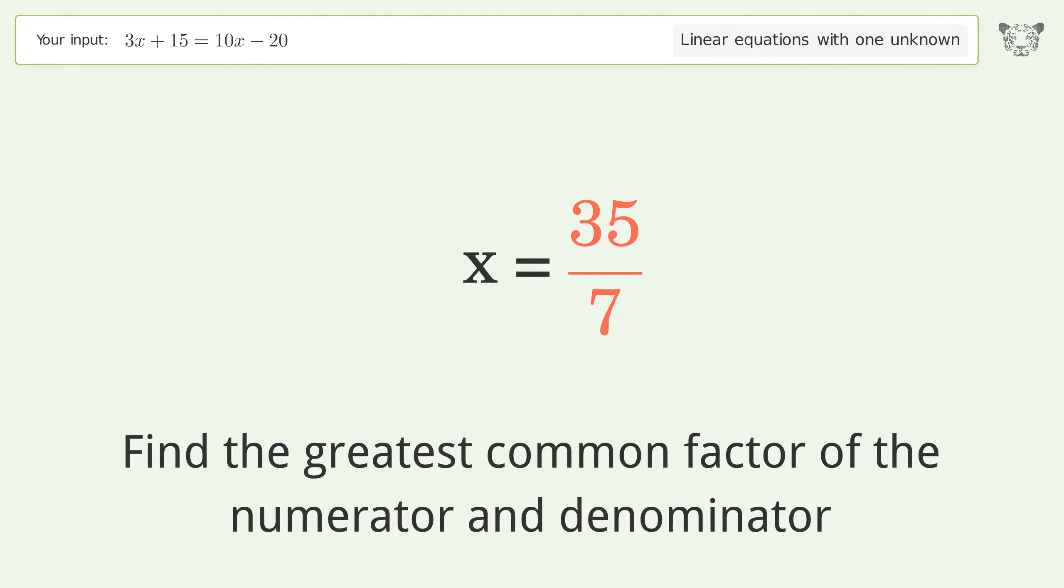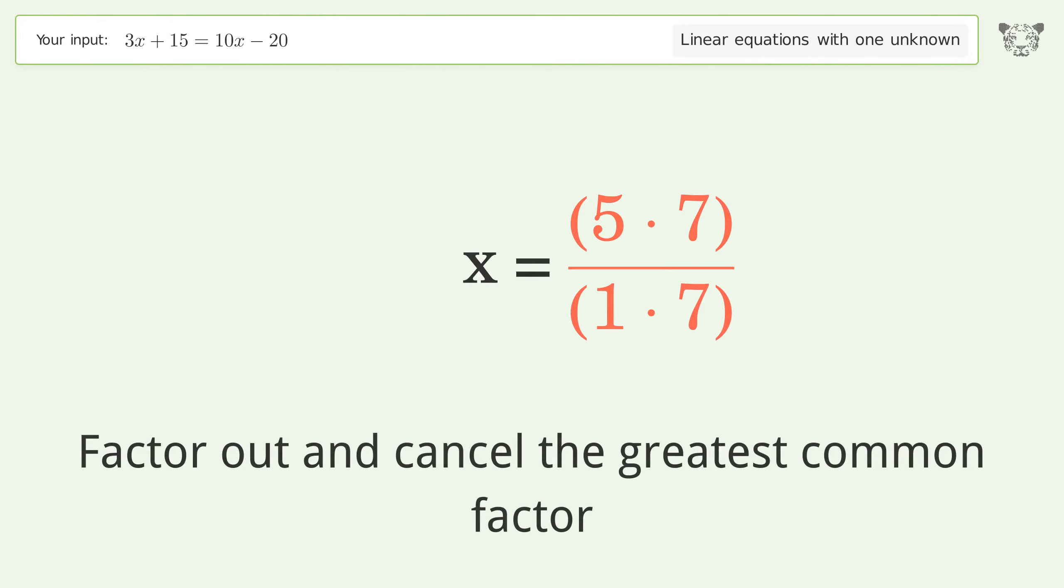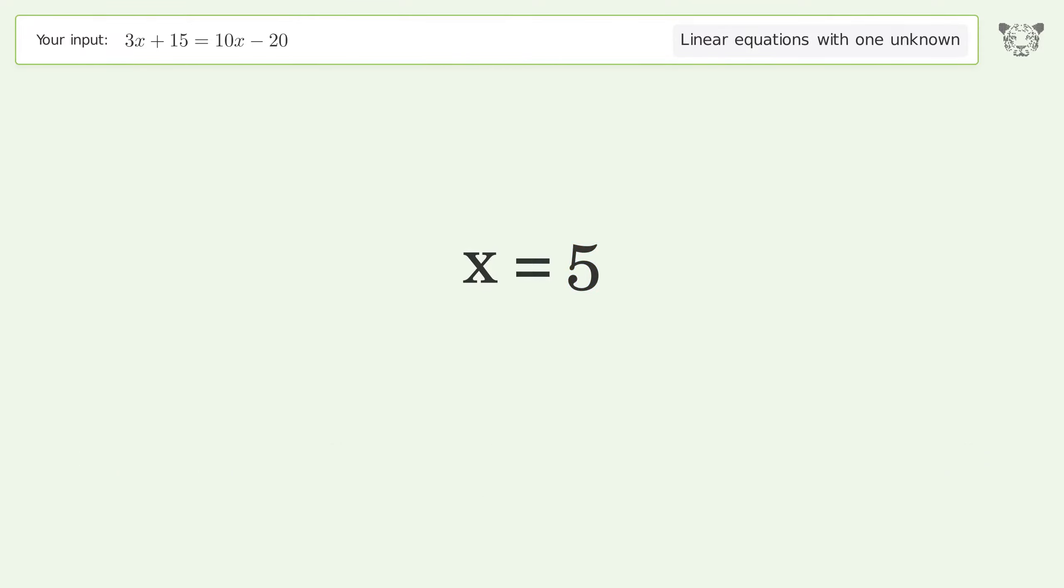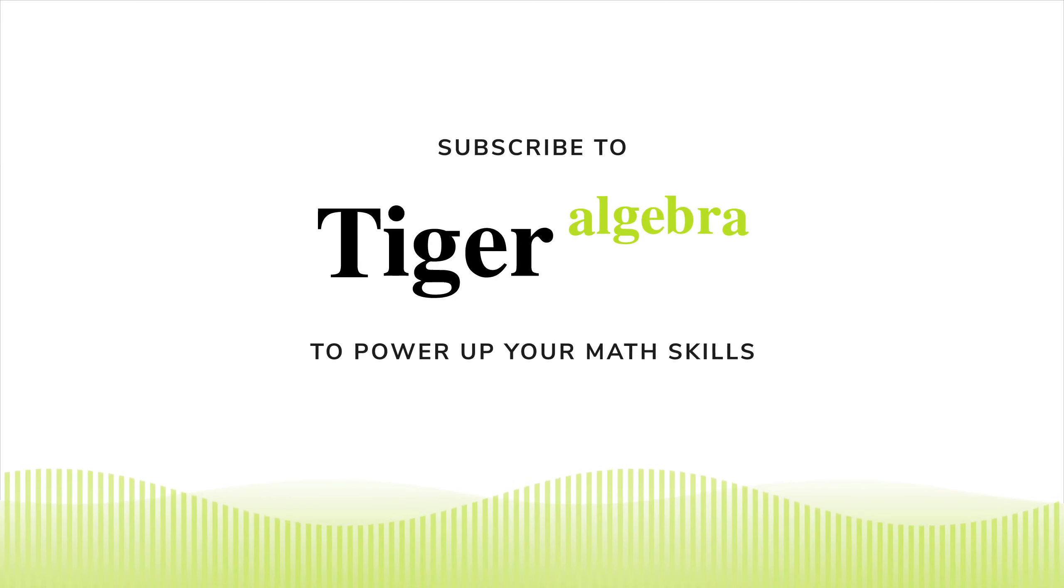Find the greatest common factor of the numerator and denominator. Factor out and cancel the greatest common factor. And so the final result is x equals 5.